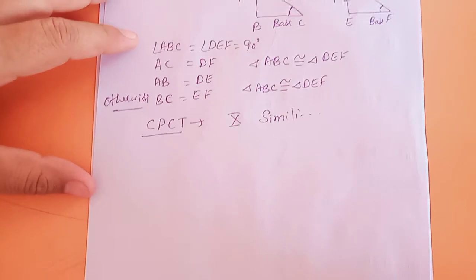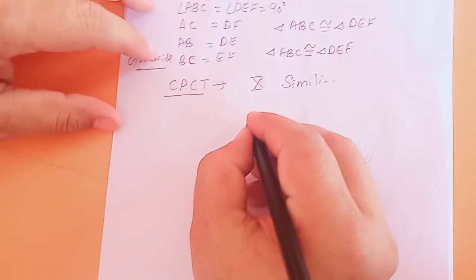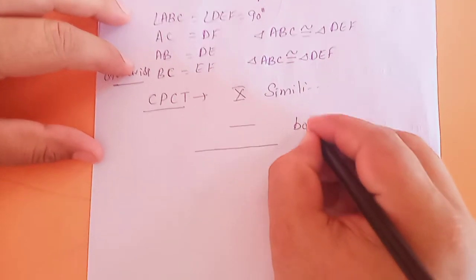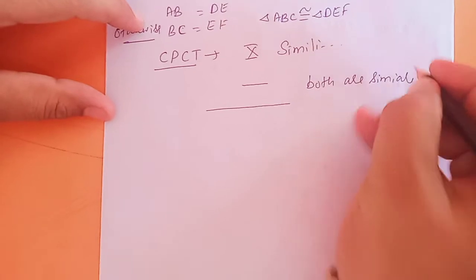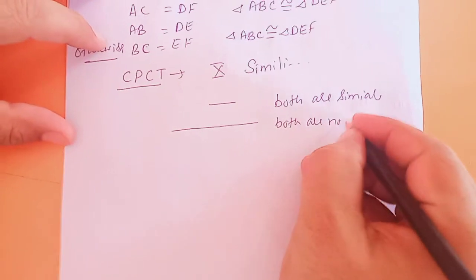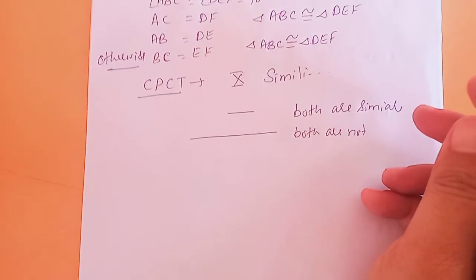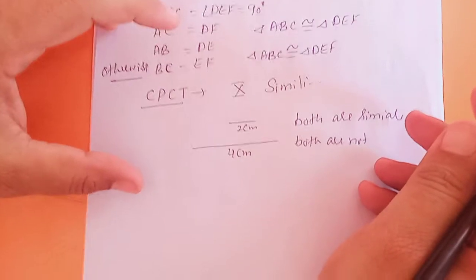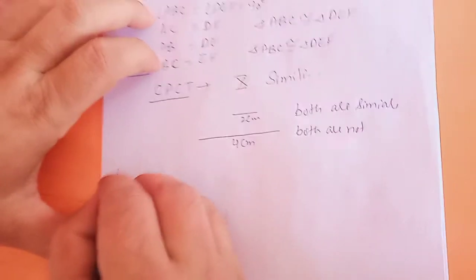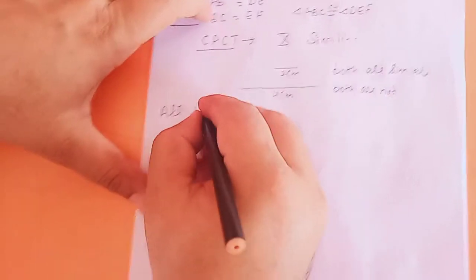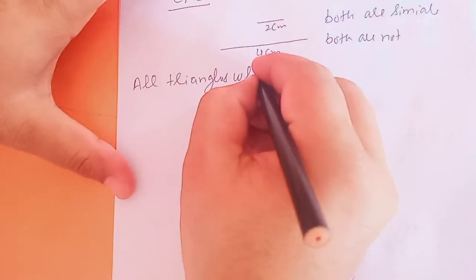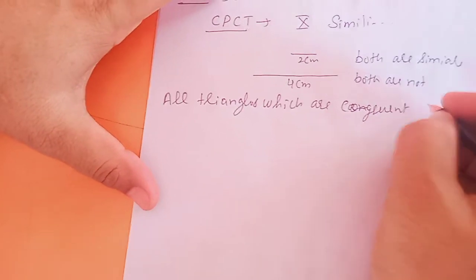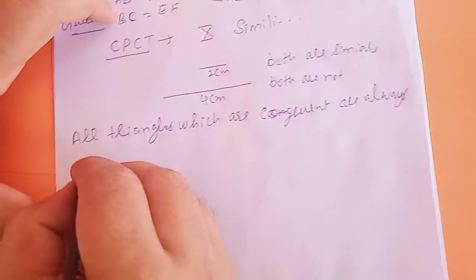Come to the topic. We can say any two line segments are similar. One line segment is here and another line segment is here — both are similar, but both are not congruent. Congruent means same as it is. If one length is 4 cm and this is 2 cm, these are not congruent but they are similar.